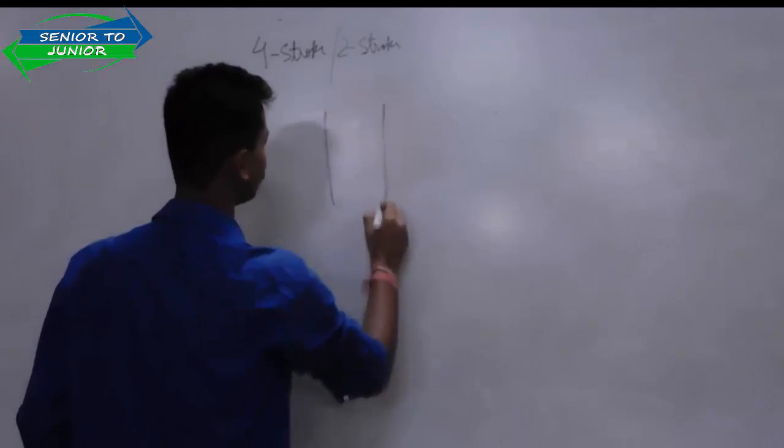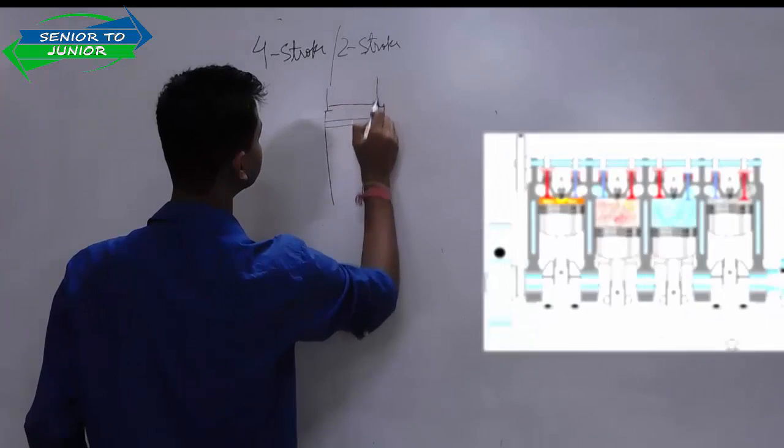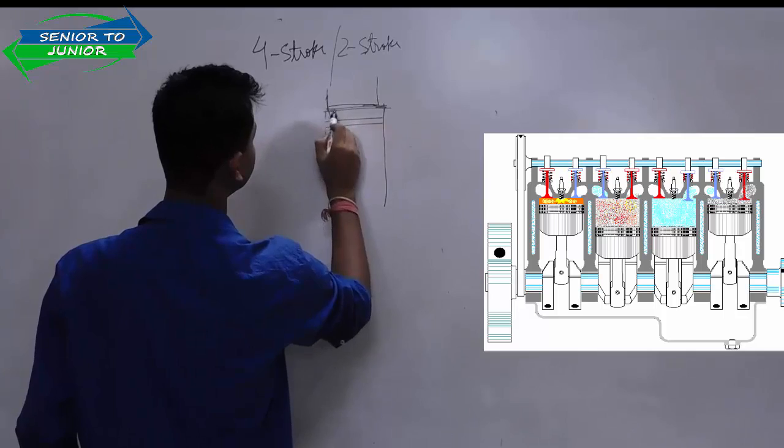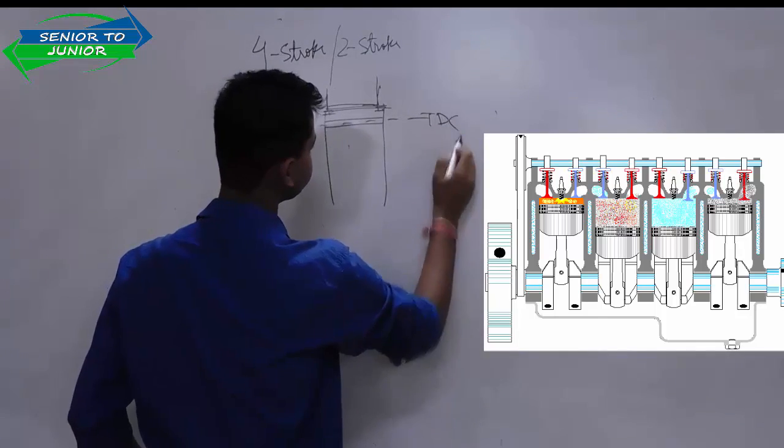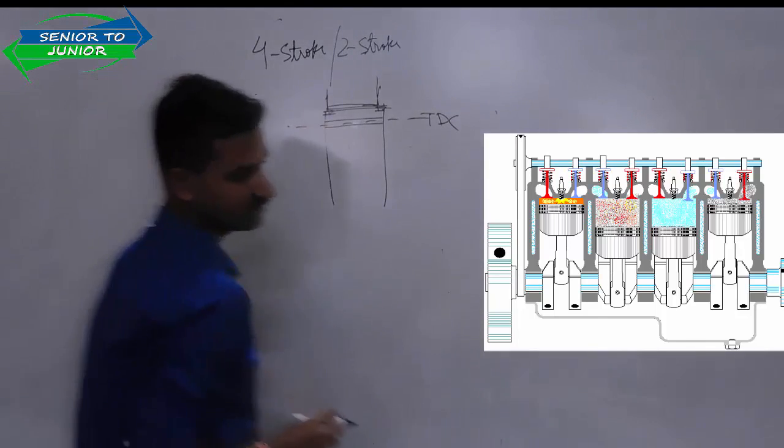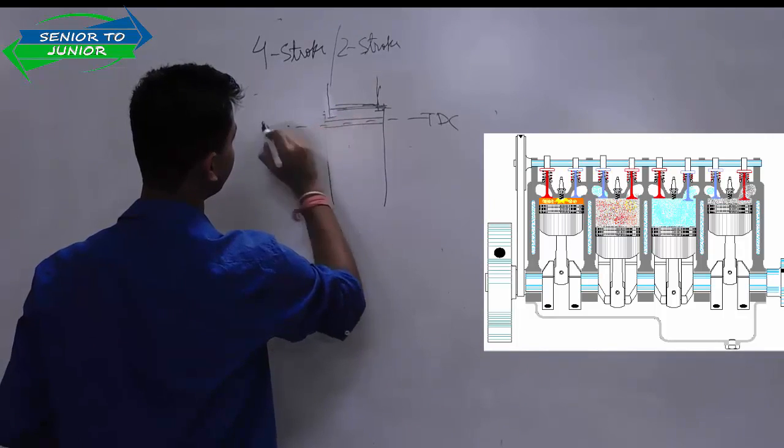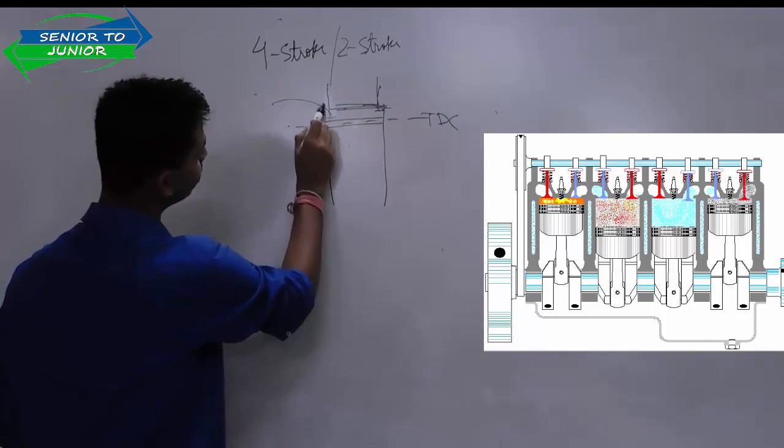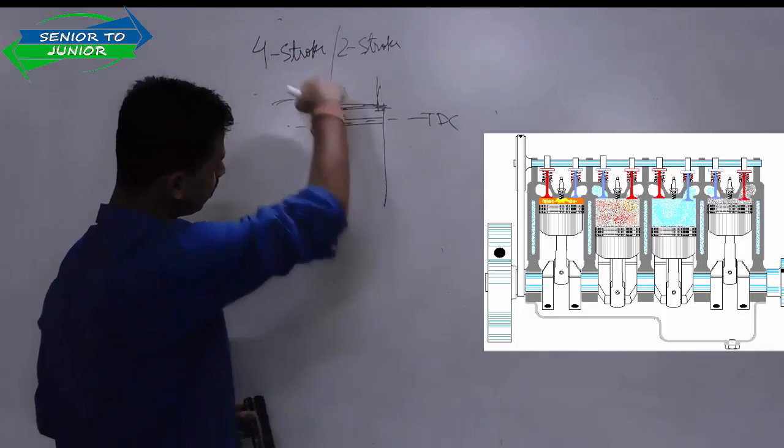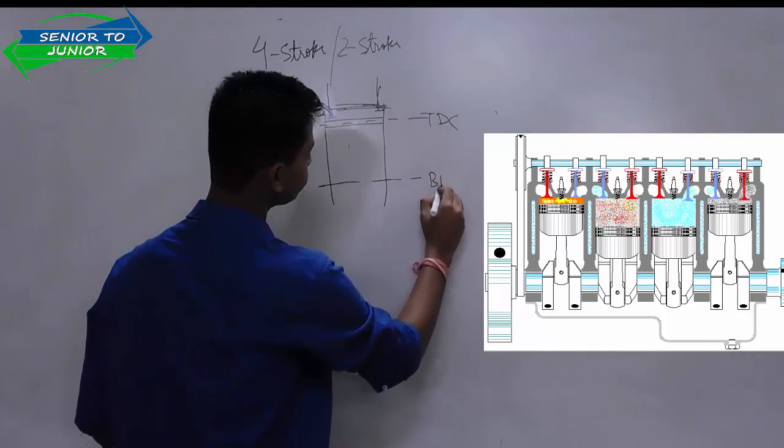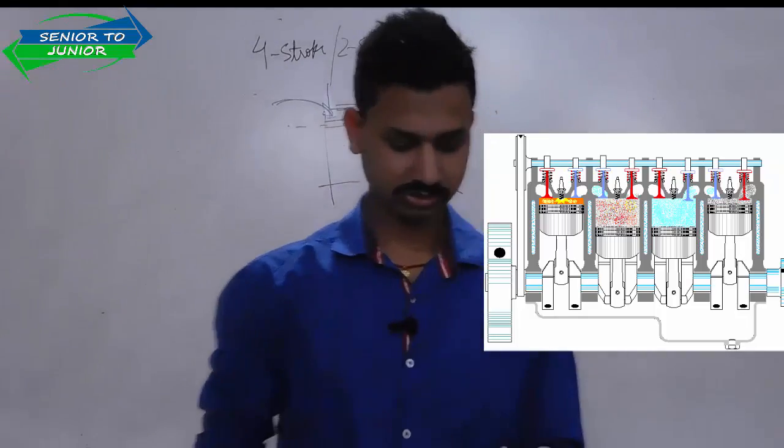You can understand this is your engine. This is your inlet valve, this is your exhaust valve. What happens when the piston is at top dead center, that is TDC? Your inlet valve opens. It will come down, and the air and fuel mixture gets inside. When it comes down, it sucks the air and fuel mixture along with it. When it reaches your BDC, it takes the air and fuel mixture to BDC. This is your first part, called suction stroke.